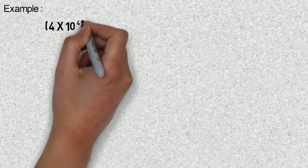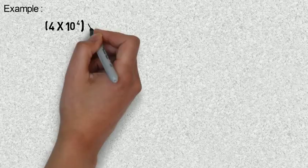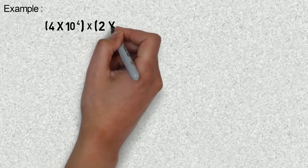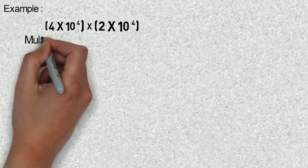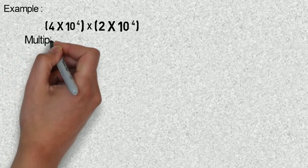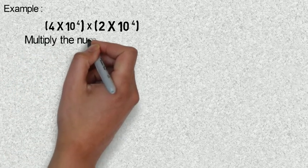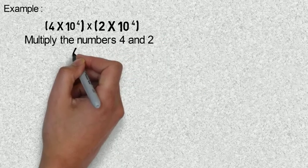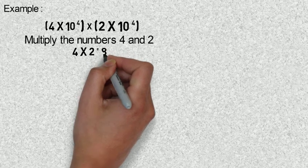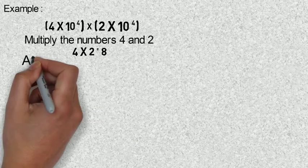Carry out the calculations, leaving your answers in standard form. Example one: four times ten raised to power four, multiplied by two times ten raised to power four. Solving this, we first multiply the normal numbers four and two, giving us four times two equals eight.